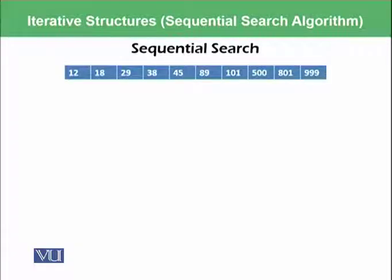We have this list which has numbers 12, 18, 29, 38, 45 and so on, and we want to search whether for example 45 can be found in this list or not. So for example we find 45 over here.